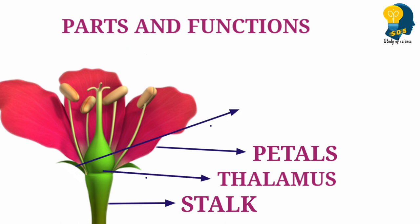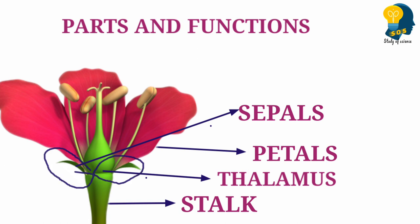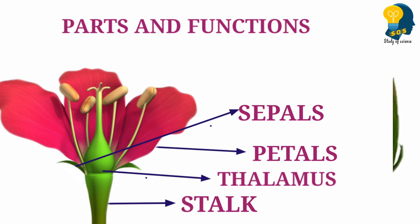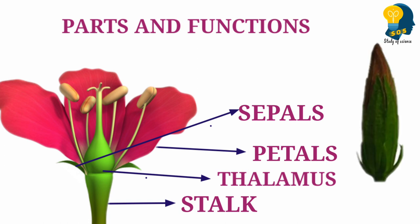Now let us move to understand the next part of the flower, that is the sepals. You can observe the green colored structures just below the petals — they are called as sepals. These sepals are green colored structures. The sepals are present just below the petals. Sepals are green in color. These sepals protect the flower when the flower is in the bud stage. When the flower is in the bud stage, these sepals protect the bud.